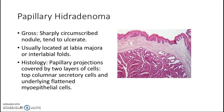Papillary hidradenoma presents as a sharply circumscribed nodule which tends to ulcerate. It is usually located at the labia majora or the interlabial folds. If you are familiar with breast pathology, you will have come across a lesion known as intraductal papilloma. Papillary hidradenoma of the vulva and vagina has the same microscopic features as intraductal papilloma of the breast. Histologically, the papillary projections are covered by two layers of cells: top columnar secretory cells and underlying flattened myoepithelial cells.